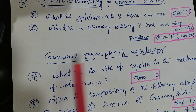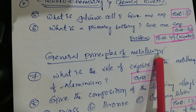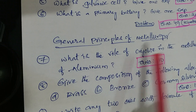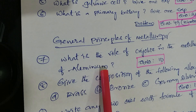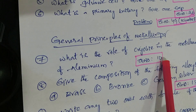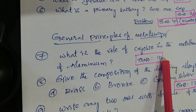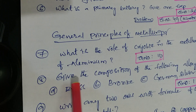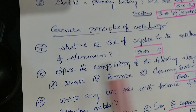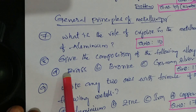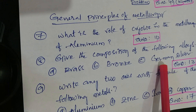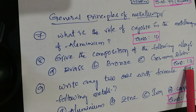Next lesson is General Principles of Metallurgy. The question is: what is the role of cryolite in the metallurgy of aluminium - that is question number 10 from material. Next question: give the composition of the following alloys - that is brass, bronze, and German silver - that is question number 13.